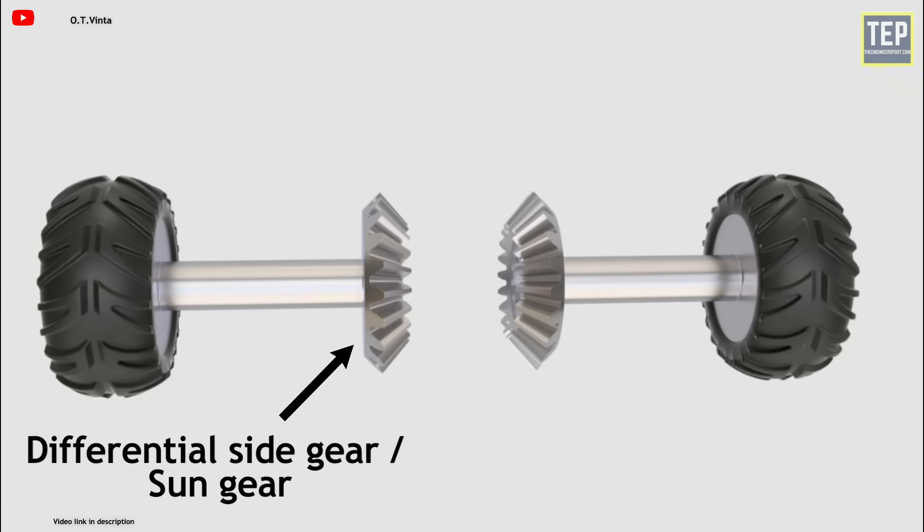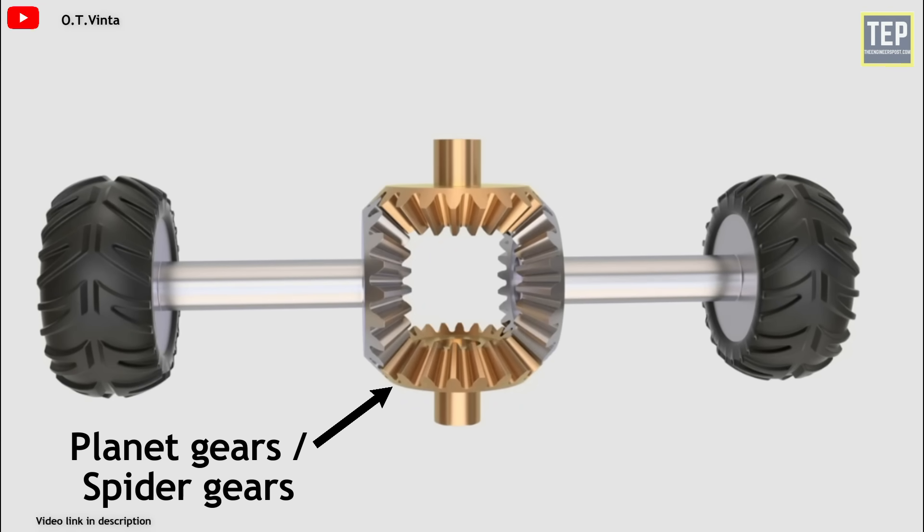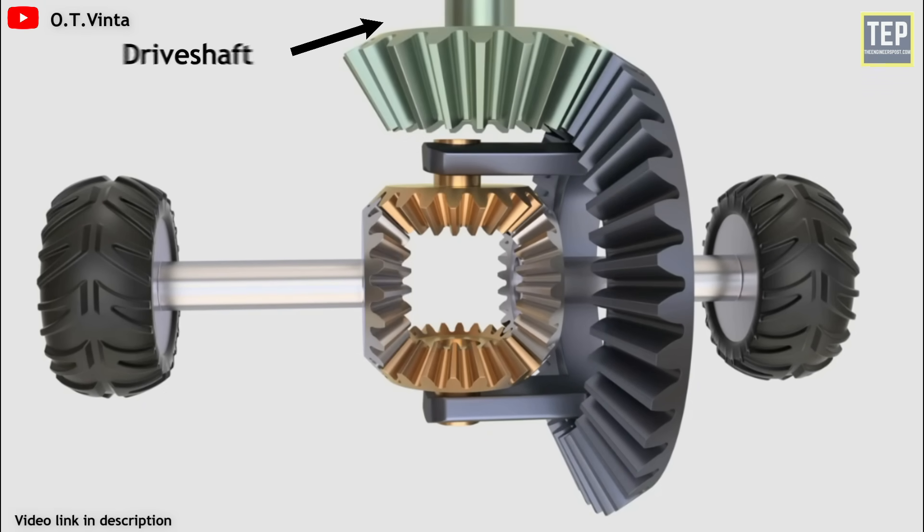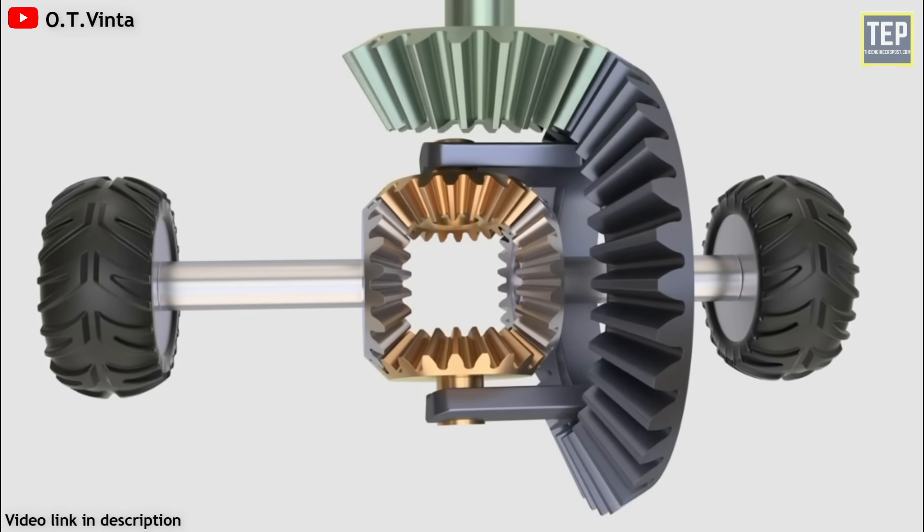Now let's find out what are the different parts used in a differential. Differential side gears or sun gears, planet gears or spider gears, ring gear or crown wheel, drive shaft, bevel pinion, and axle or half shafts. Let me give you the overview of these parts in detail.